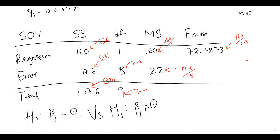You are getting marks for properly writing the hypothesis. You can write it in notation or in words such as 'the model is significant' or 'there is a linear relationship.' The F-critical value is read from the F-table at alpha equals 0.05. Our degrees of freedom are 1 (numerator) and 8 (denominator), so we look up F(1, 8) at 5% significance.